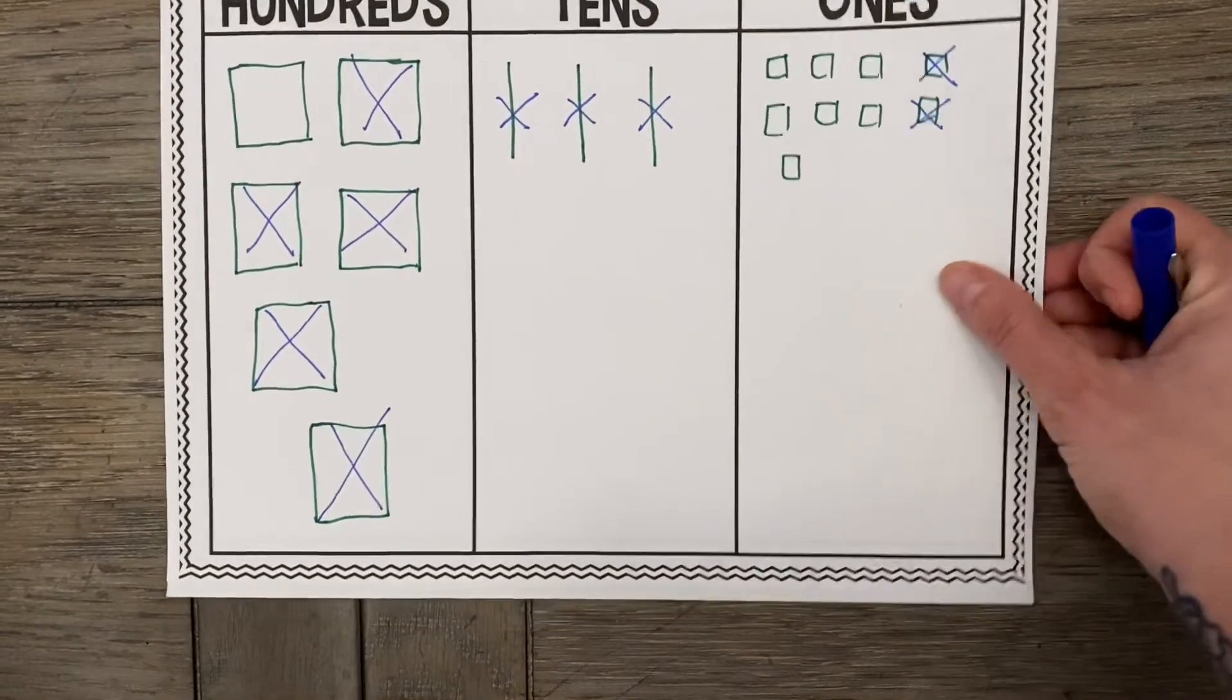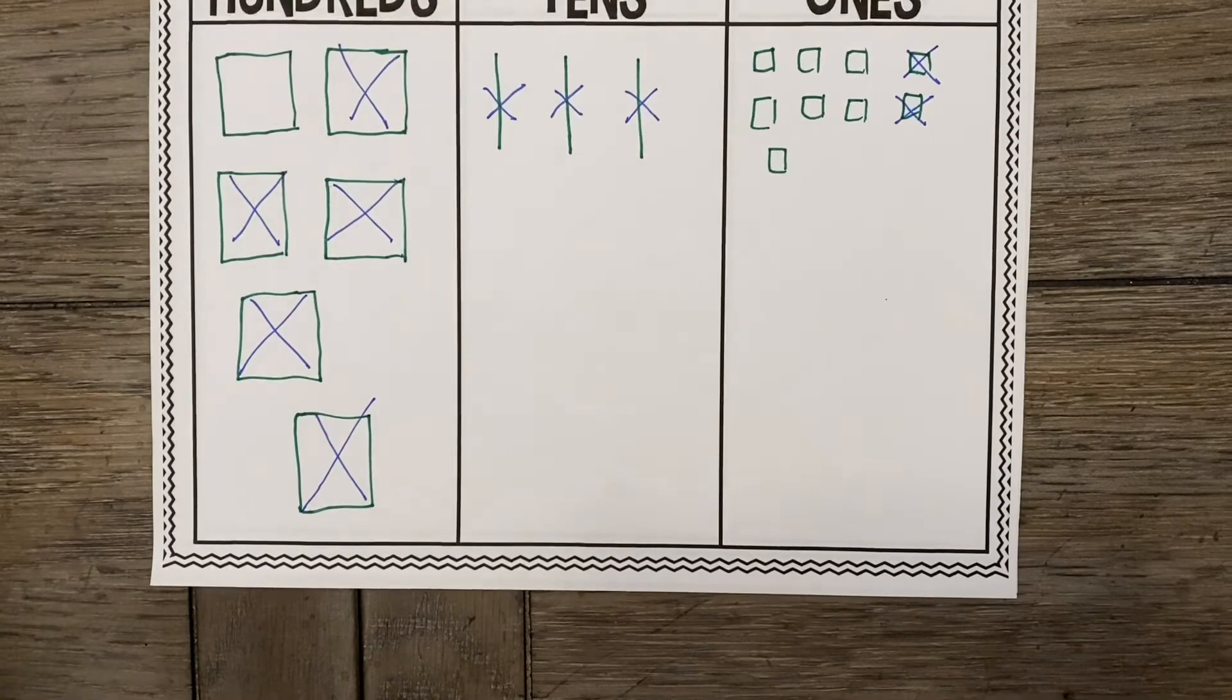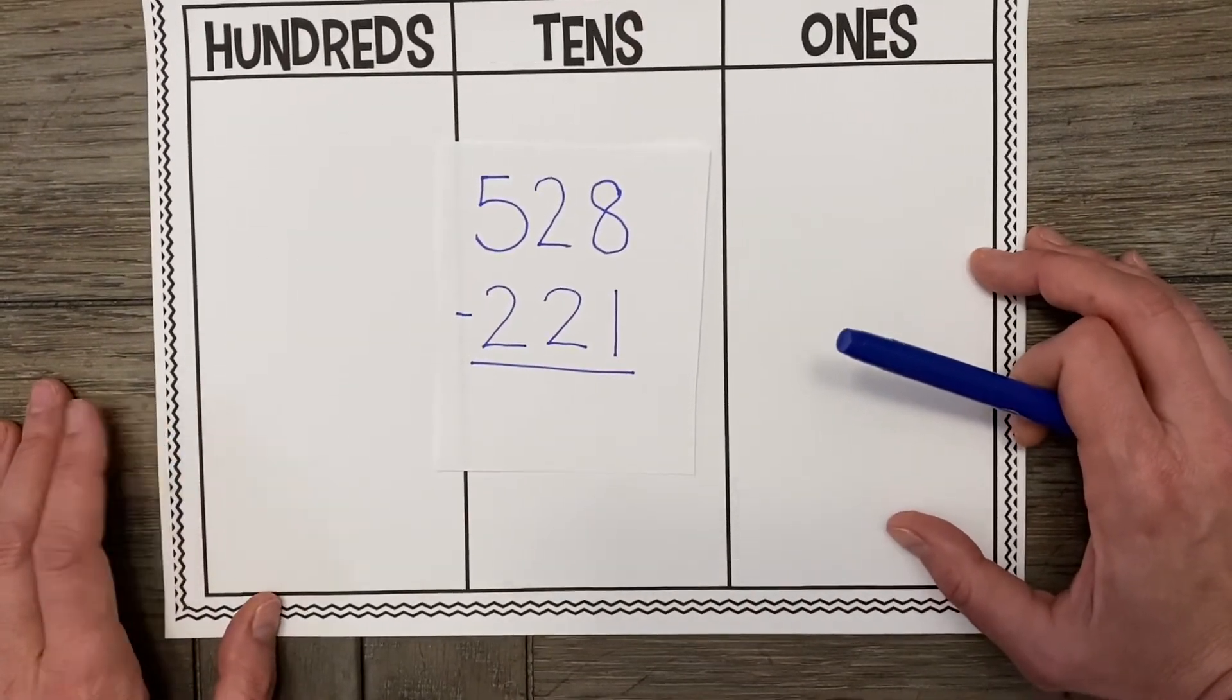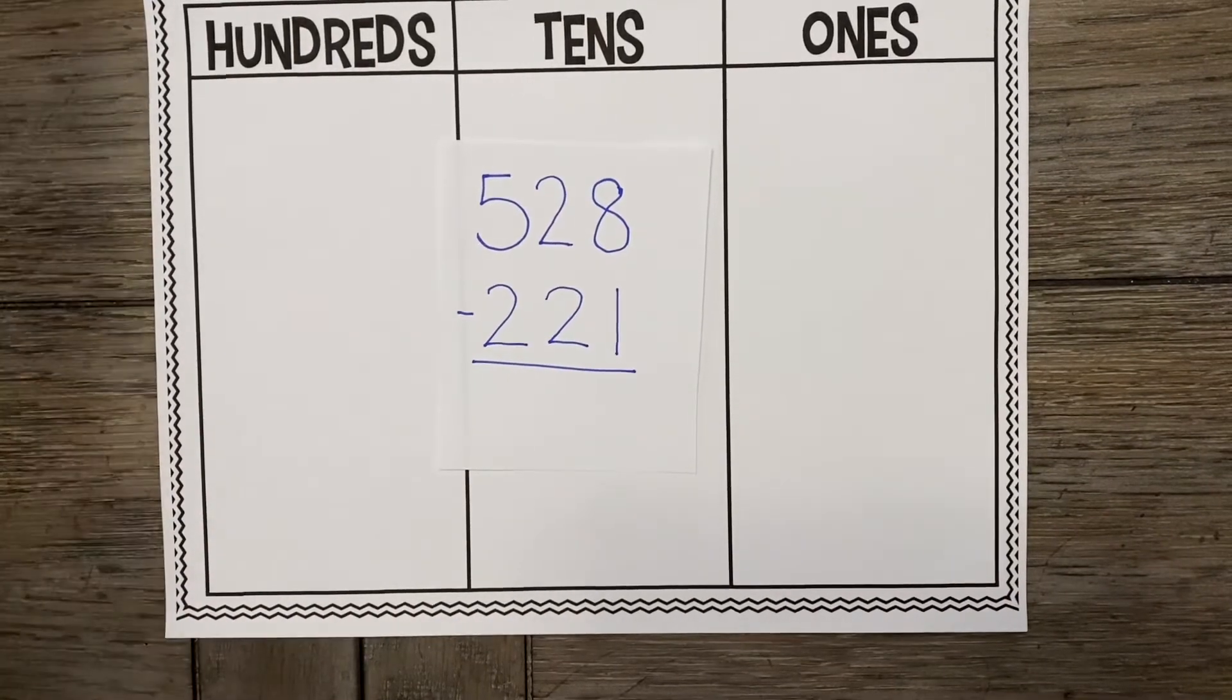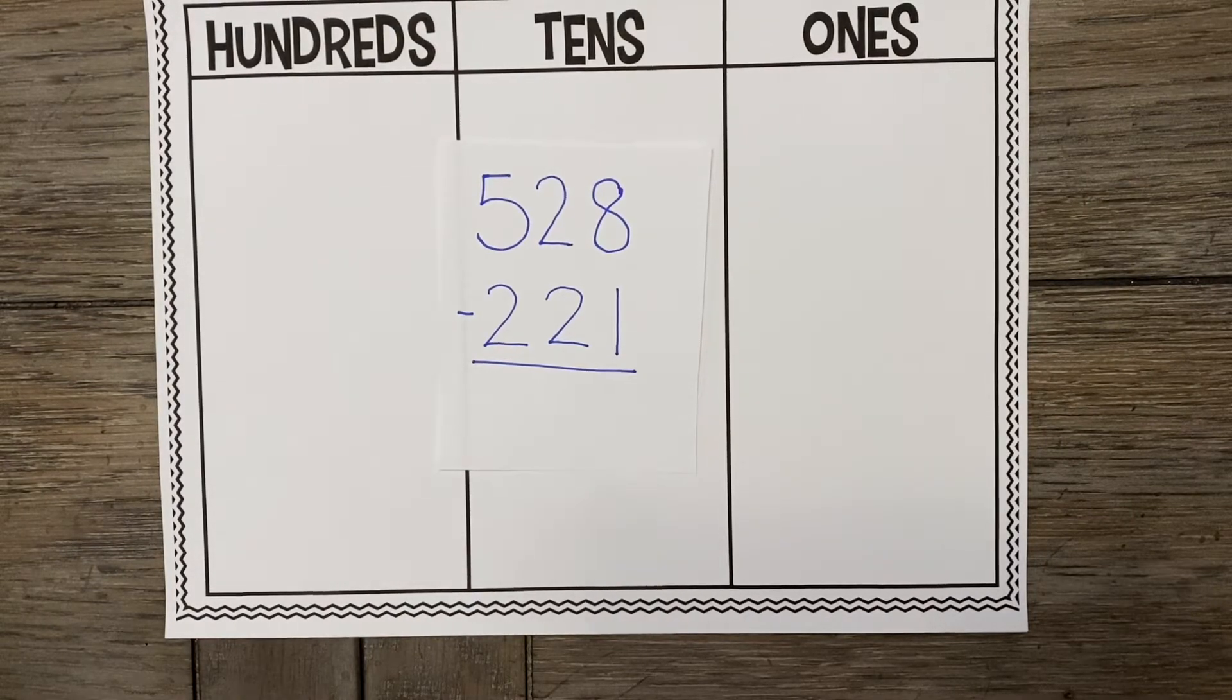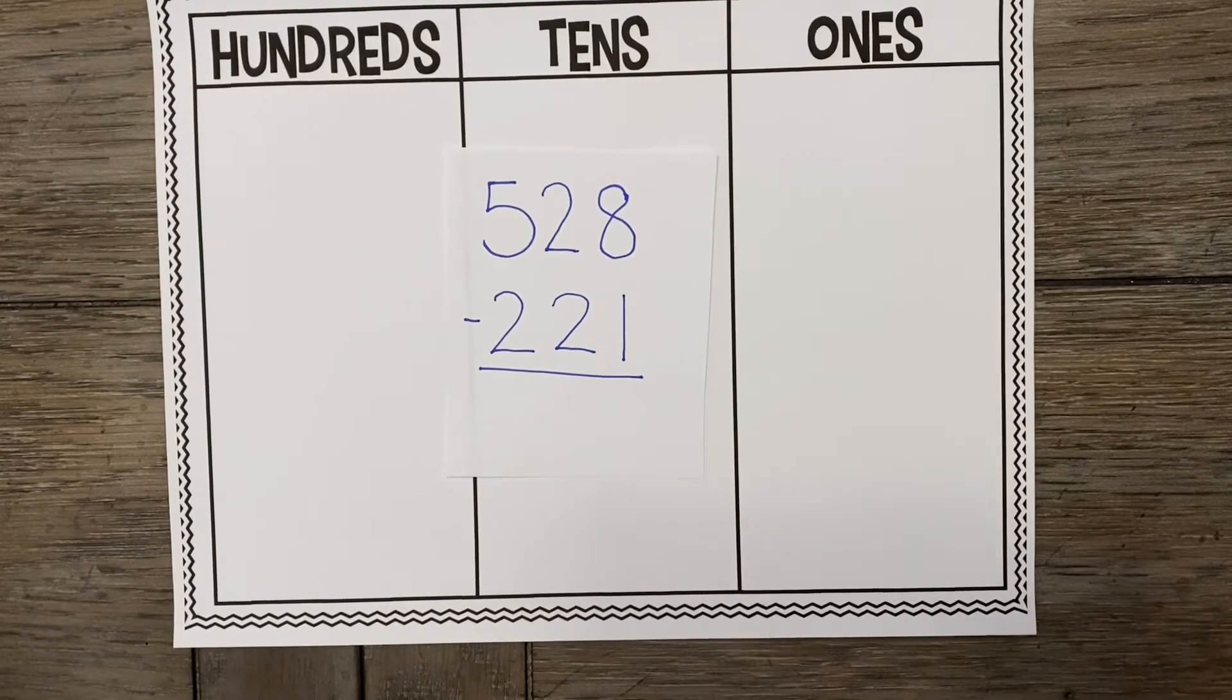Alright friends, let's do one more. And this time I'm going to have you do some of this work. We are going to do 528 minus 221. So what is the first thing that we have to do here? Great job. We have to draw out the number 528. Do we draw out the number 221? No, we do not. That's right because we're taking away. Okay.